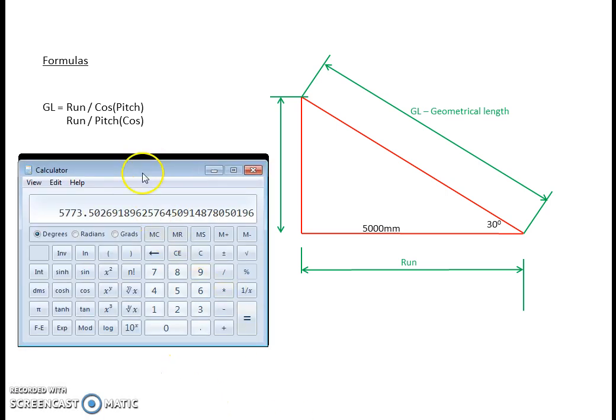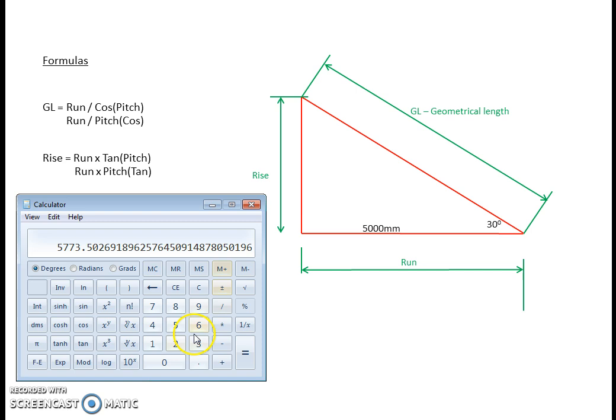So let's bring that calculator up again, and we will just cancel out of that. We're going to run these figures through. Now remembering that when you're using your GL formula, it's divided by, but when we're using the rise formula, we're using a times. So we'll go 5m run times 30 degrees, and now I'm going to hit the tan button instead. Run times the tan of the pitch, press equals. That gives me a rise of 2886. I'll round that up to the next millimetre, 2887.